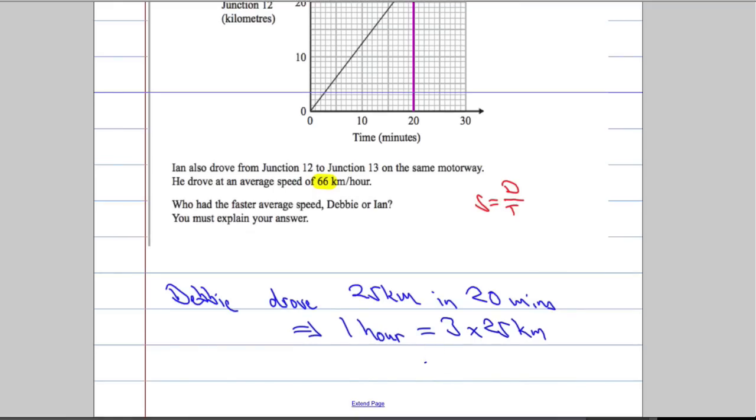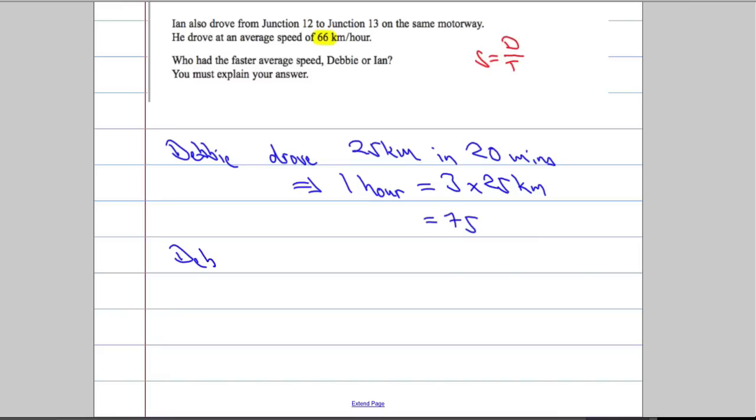And three lots of 25 is 75. So Debbie drove at 75 kilometers per hour. So Debbie was faster, and that should be good enough to get your full marks.